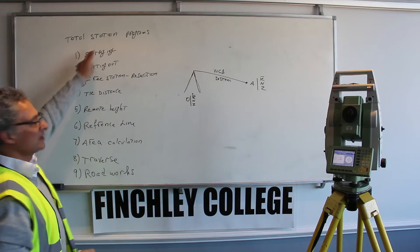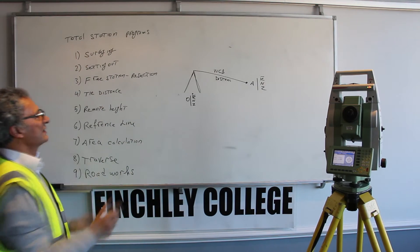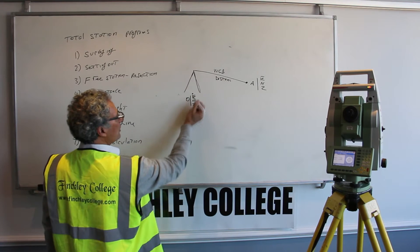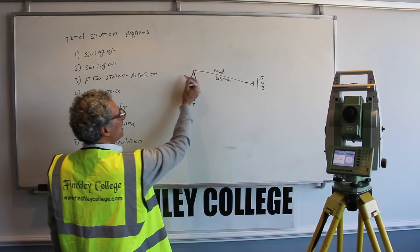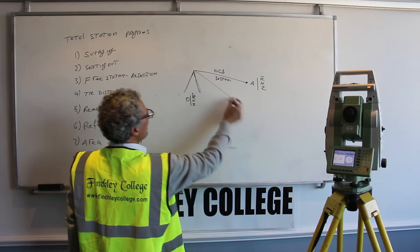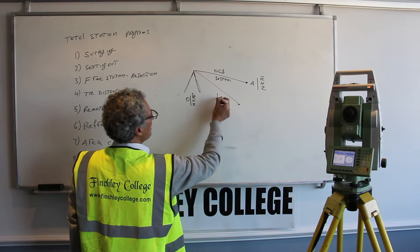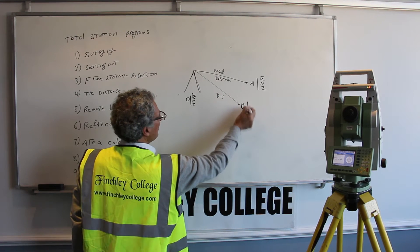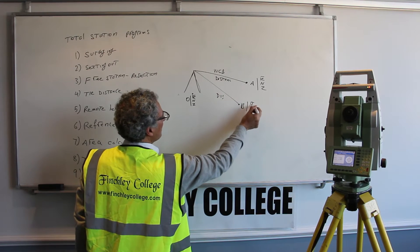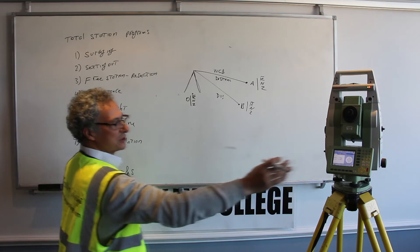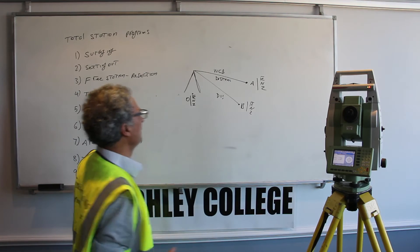So that is as simple as that: you will set up the instrument, you know its position, you will sight to any point you want to survey, you measure the distance, and it will calculate and show the position on the screen.